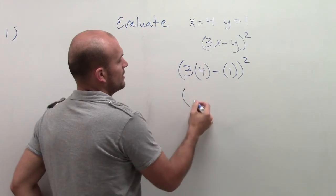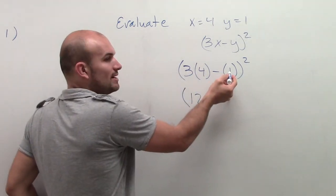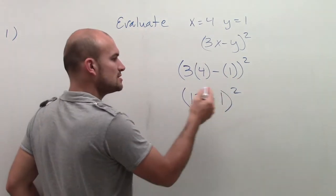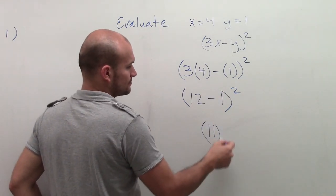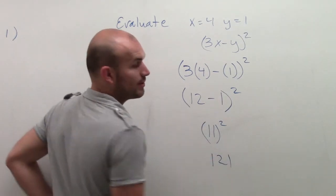3 times 4 is going to be 12 minus 1 in parentheses. I don't need to keep that in the parentheses. I can just do minus 1 squared. So then I do 12 minus 1, which is 11 squared. 11 squared is 121.